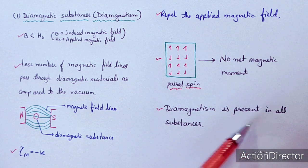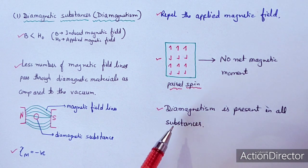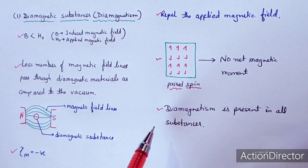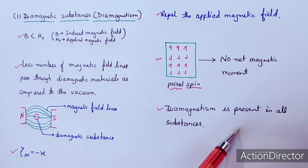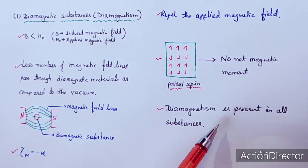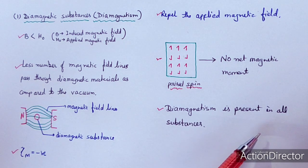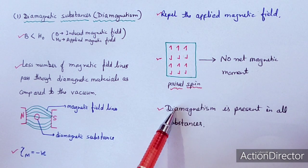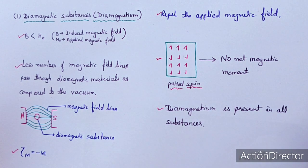Diamagnetism is present in all kinds of substances because there are paired electrons in each system. In the outer valence shell there may be some unpaired electrons, and due to those unpaired electrons, some other kind of magnetism may also be present. But due to the paired electrons, diamagnetism is present in all substances.